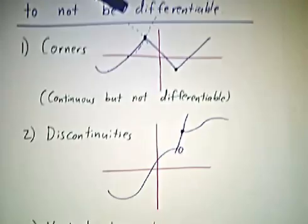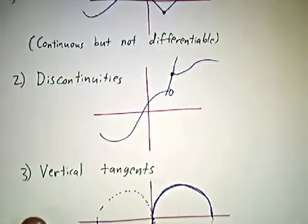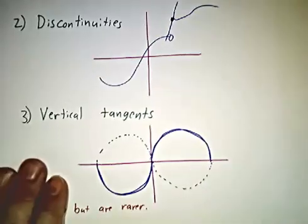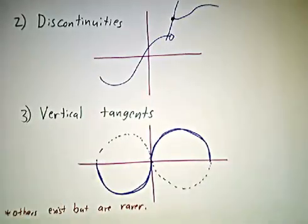So corners, discontinuities, and vertical tangents — those are the main ways that a function fails to be differentiable.